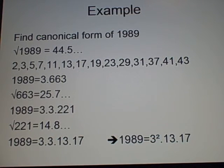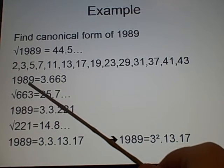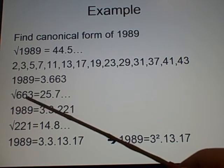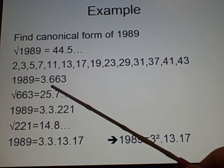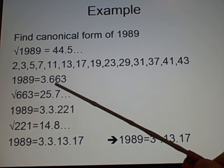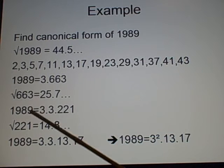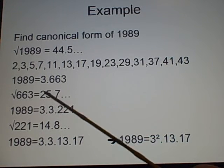And what you do, this is just a method of trial and error. You get your calculator out and you do 1989 divided by 2, nope. 1989 divided by 3, yes. And it's equal to 663.